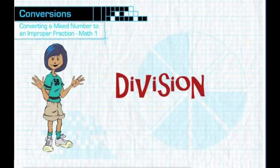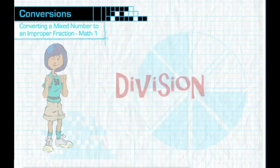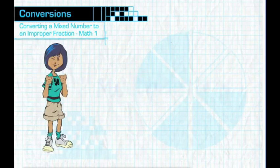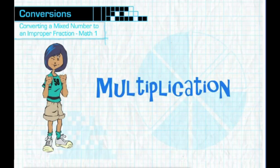We used division to convert an improper fraction to a mixed number, remember? What do you think we used to convert a mixed number to an improper fraction? Just the opposite — multiplication.